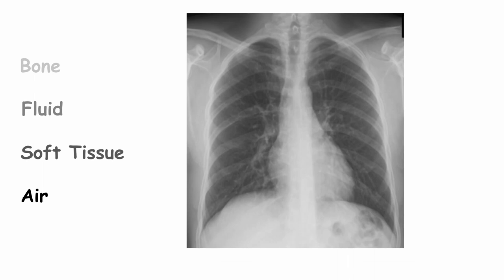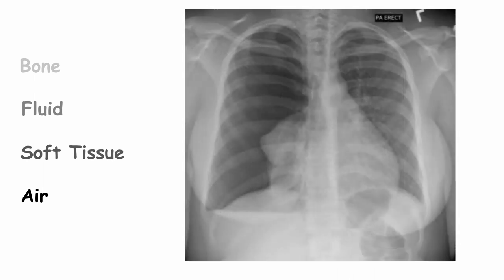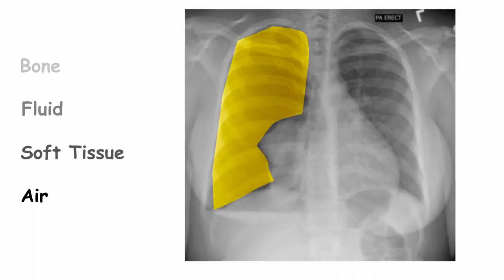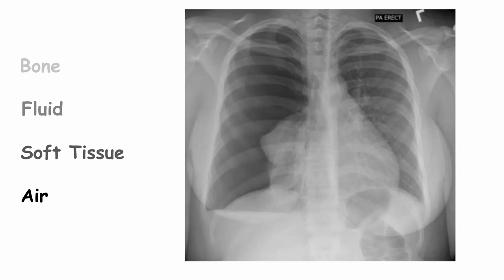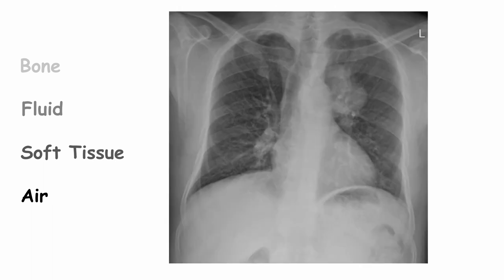Different pathologies will therefore show up as different densities on the chest X-ray. For example, a pneumothorax has air in the pleural space where it shouldn't be, so will appear black. And a lung tumour will show as an area of increased tissue density in the lung, so will appear whiter than the surrounding air.